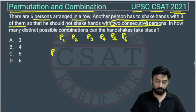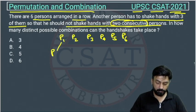In how many distinct possible combinations can the handshakes take place? Suppose this man is shaking hands with this one, then he will not shake hands with P2. Then he will shake hands with P3. He is shaking hands with P1 and P3.